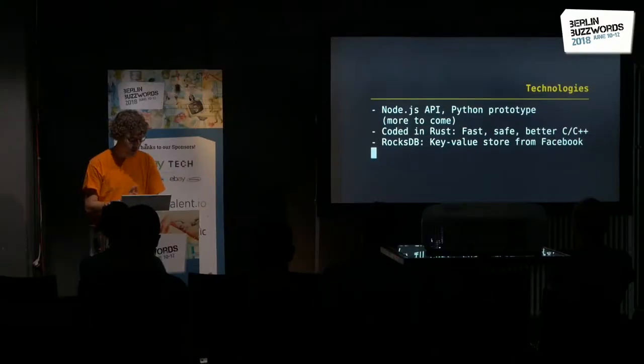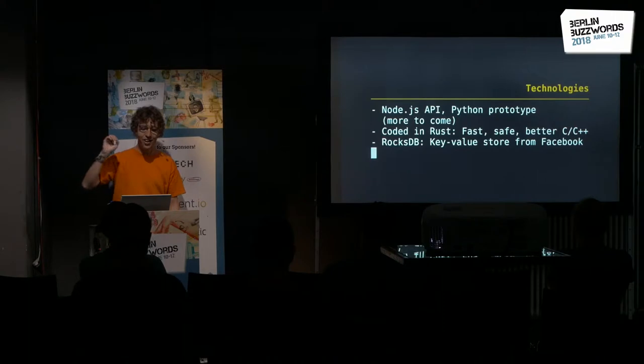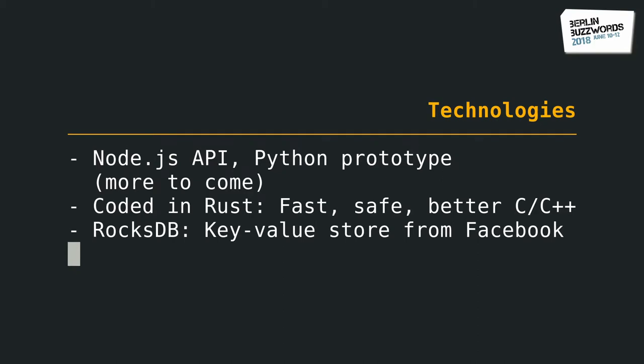The technology used: currently we have a Node.js API for the database, for Linux. There's also a Python prototype — I did just a one-day code sprint on that. The whole thing is coded in Rust. For those who don't know Rust, it's a fast, safe, and better C++. Many languages claim that, but if you look into Rust, it's really true. And the underlying store we use is RocksDB — a solid key-value store from Facebook.